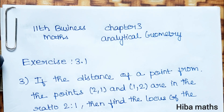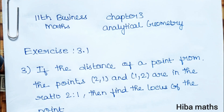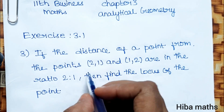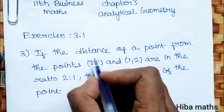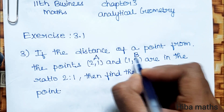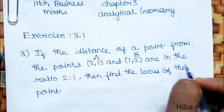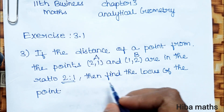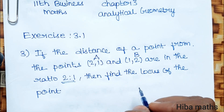Exercise 3.1, the third question is solved in this video. If the distance of a point from the points (2,1) and (1,2) are in the ratio 2:1, then find the locus of the point.